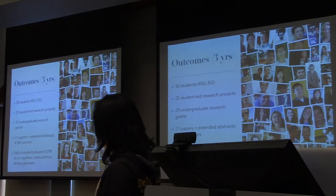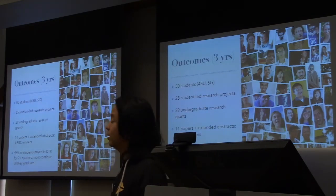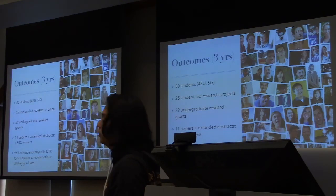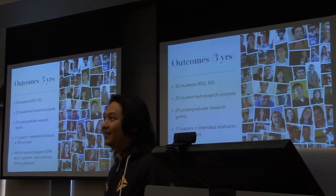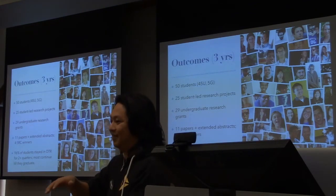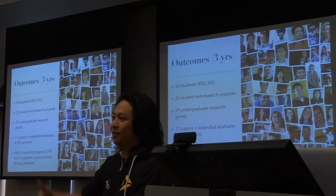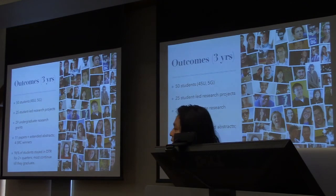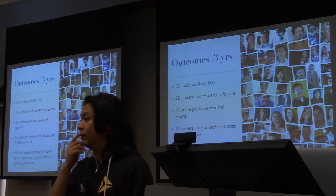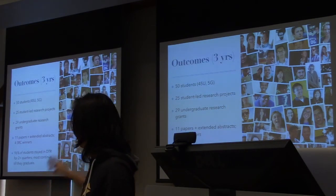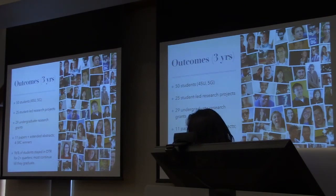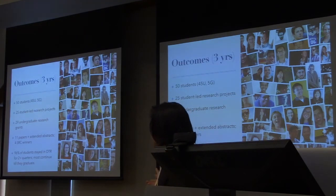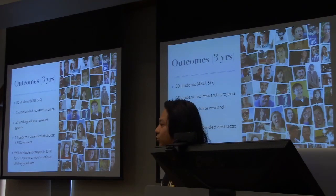Here are some high-level outcomes. In the first three years of our program, we've hosted 50 students who worked on 25 student-led research projects. They won 29 undergraduate research grants from the university — the most that any faculty member has had, and the most that computer science has had in the last 10 years combined across all faculty. Students published 11 papers and extended abstracts at ACM and triple-I conferences. We've had four student research competition winners, most recently Sarah Lim, who does wonderful work on learning web programming. And 96% of students stayed in DTR for at least two quarters, with most continuing until they graduate.